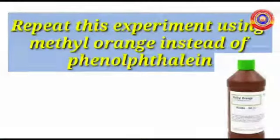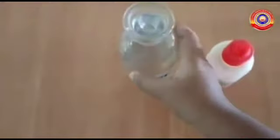Repeat this experiment using methyl orange instead of phenolphthalein. Methyl orange is an orange colored solution. Now we are going to see what happens when methyl orange is added on acid. Look at the color change—the color changes to pale pink. In an acidic medium, the color of the indicator methyl orange is pale pink.